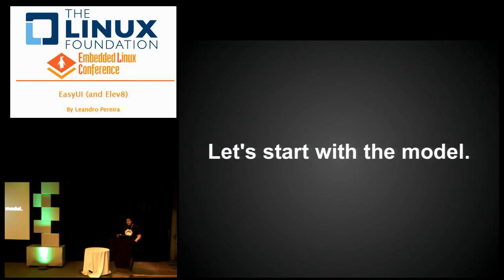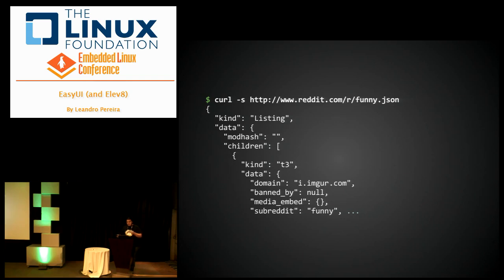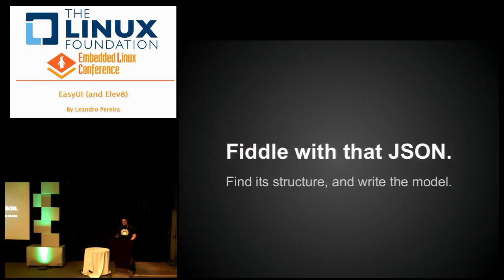I'd start with the model. Reddit offers a JSON file. For those that don't know, JSON is JavaScript Object Notation — it's a way to serialize data in a less brain-dead way than XML. So you fiddle with it, find the structure, and then write a model.